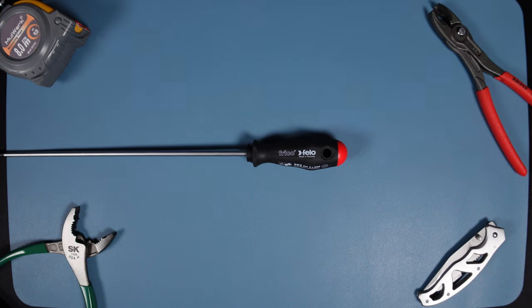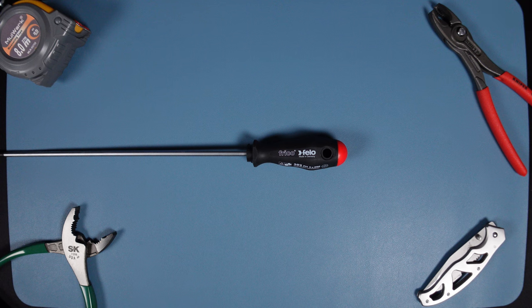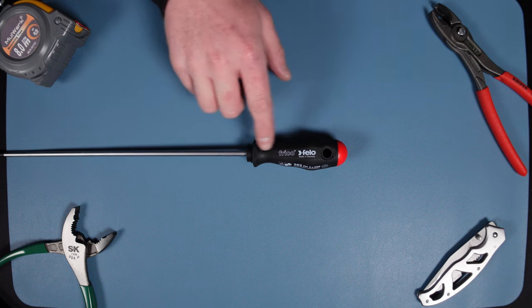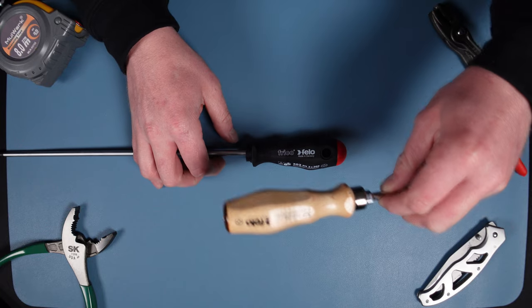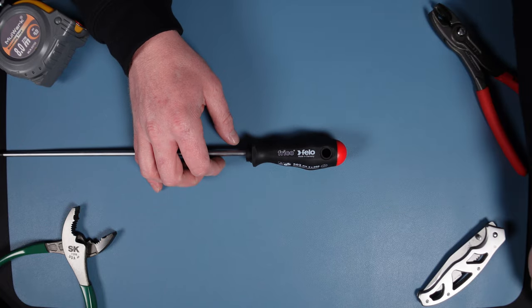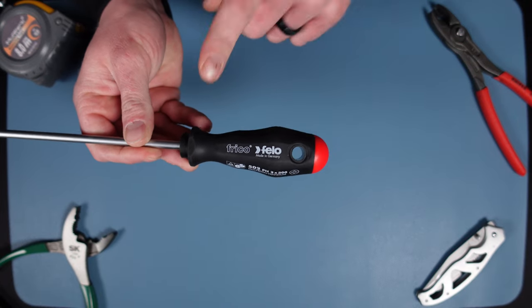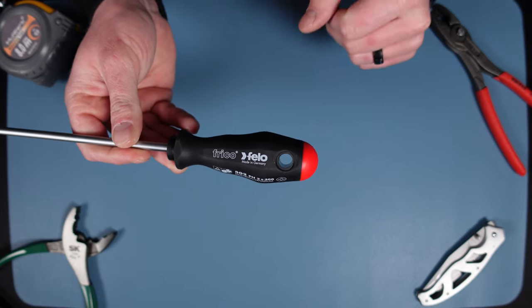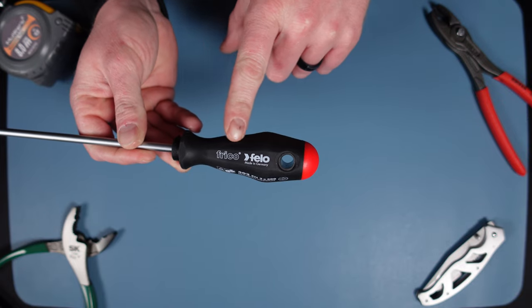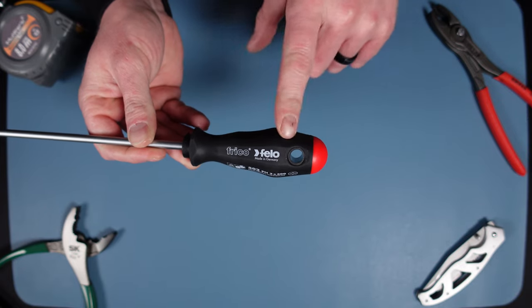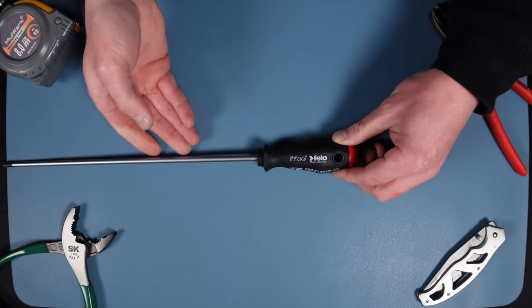So today let's get into the specs, features, details, and pricing. This once again is the Filo two component or the Filo wood by Bondus. Just like the name states, it's two components for the handle.